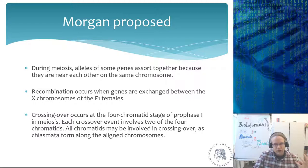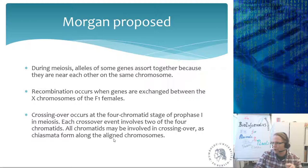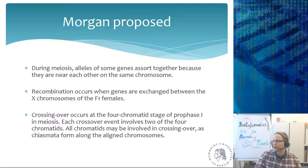Morgan's proposition was that during meiosis, alleles of some genes assort together because they are near each other on the same chromosome, and recombination occurs when genes are exchanged between the X chromosomes of F1 females. This crossing over event occurs at the four-chromatid stage of prophase I in meiosis. Each crossover event involves two of the four chromatids, and all chromatids may be involved in crossing over as chiasma form along the aligned chromosomes.